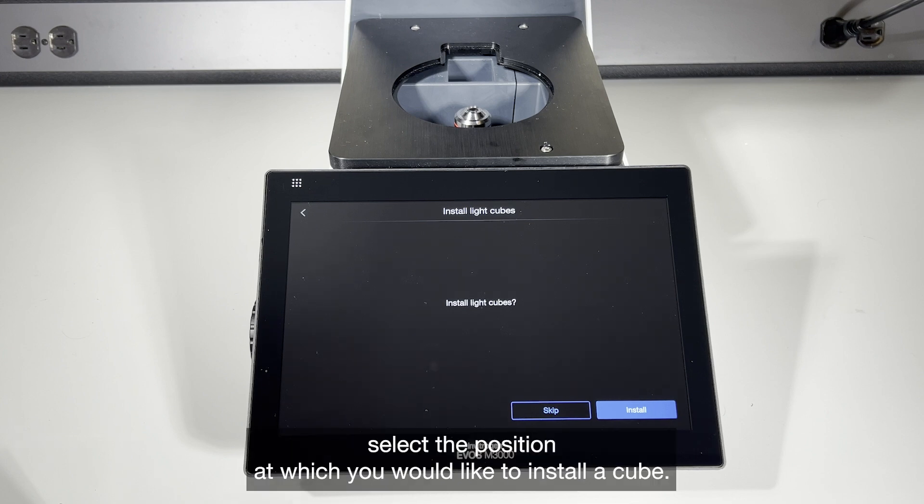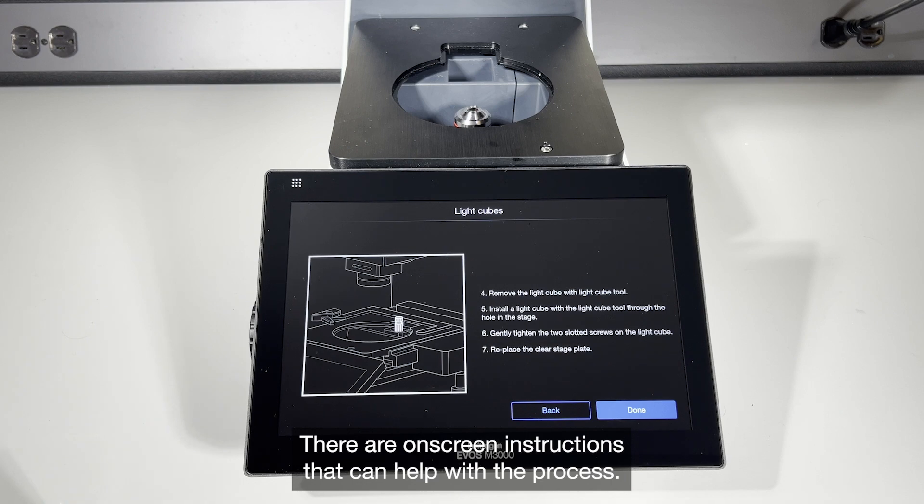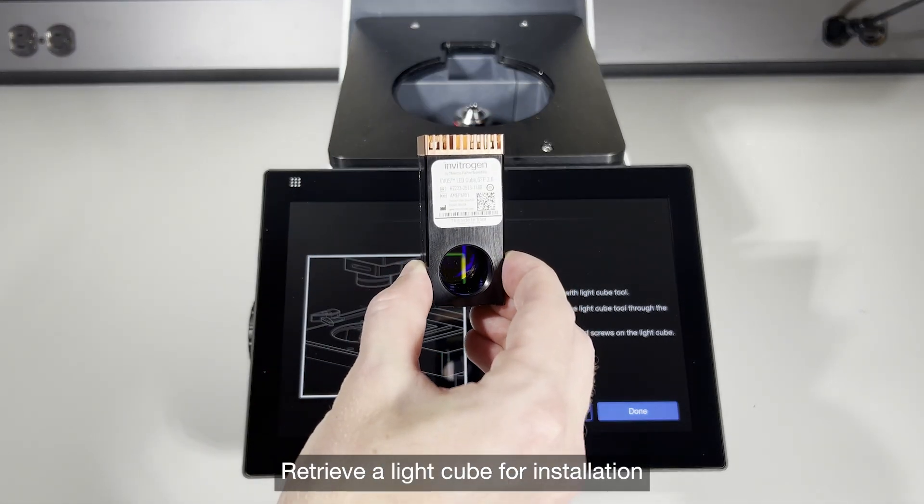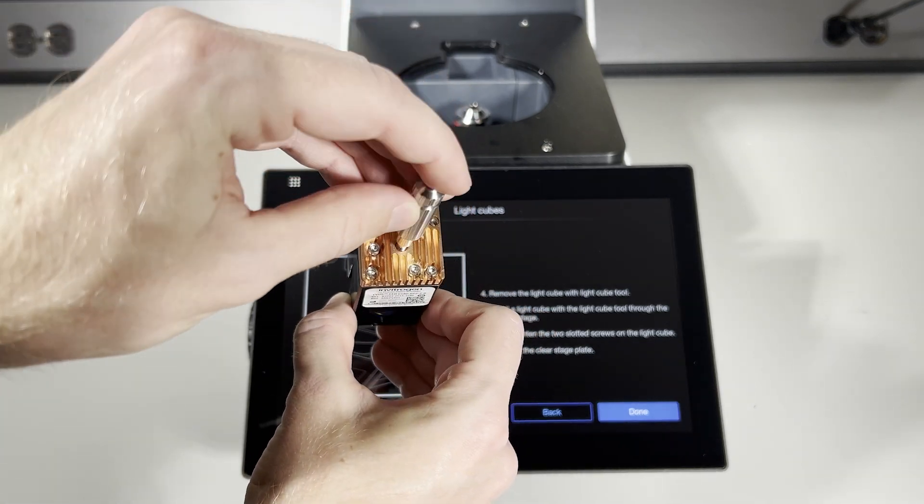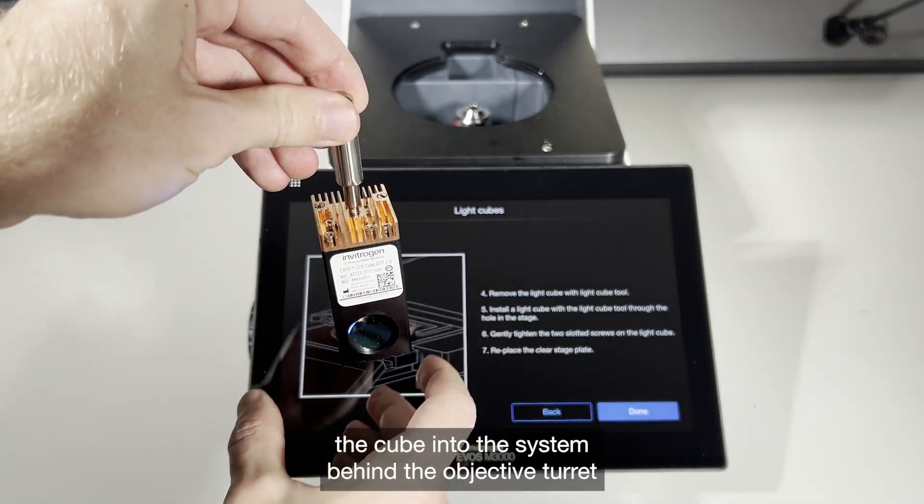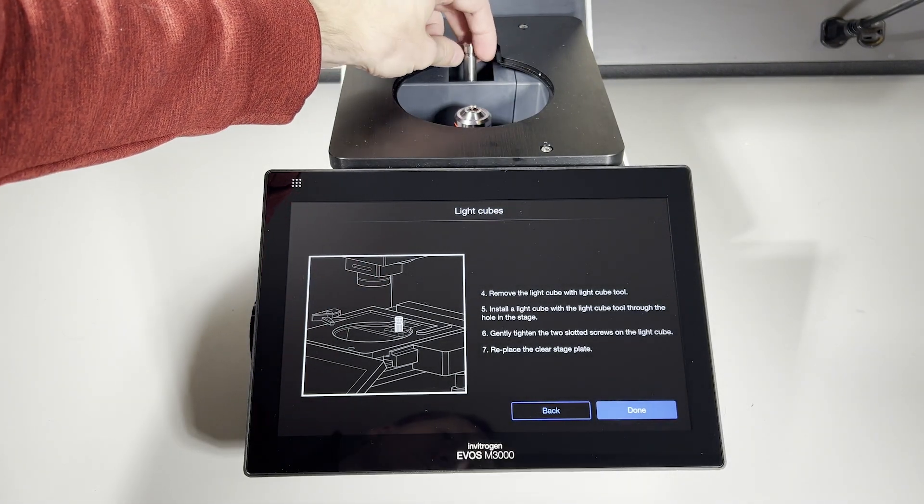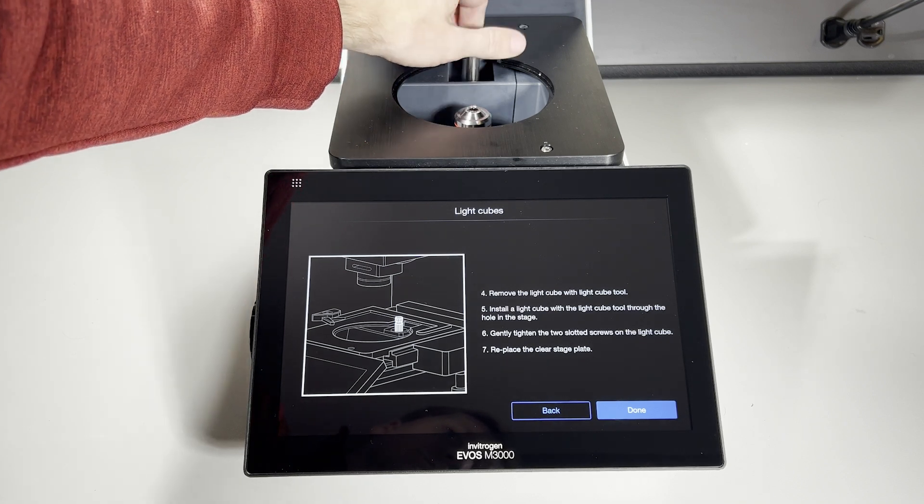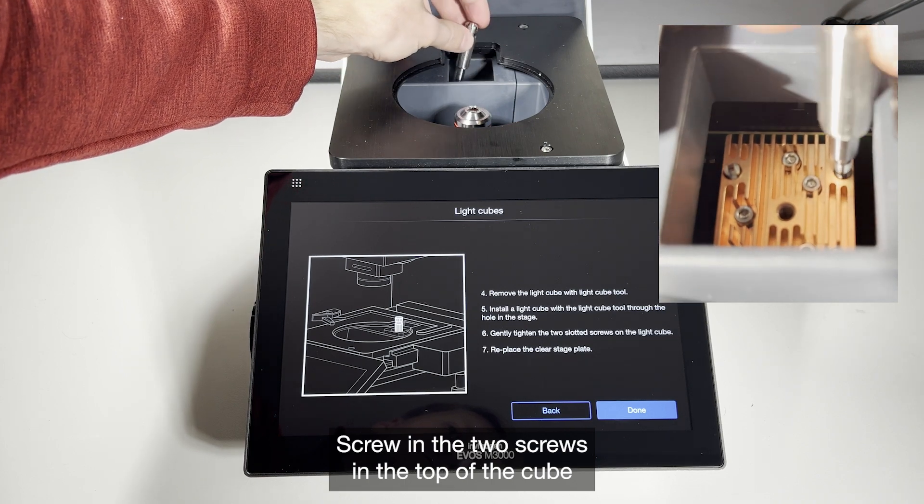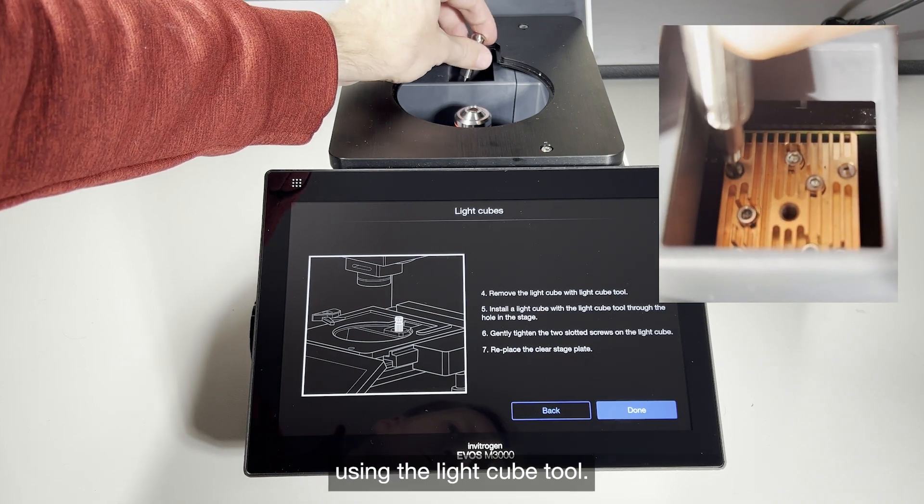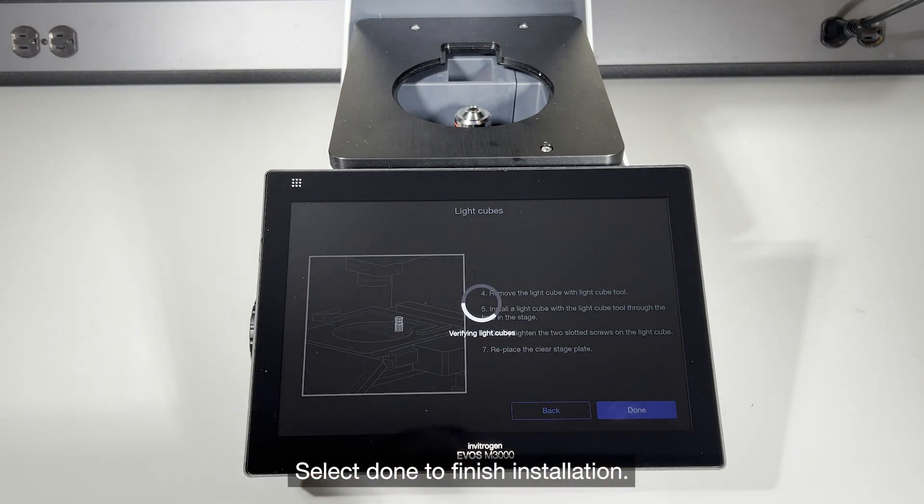If installing light cubes, select the position you would like to install a cube. There are on-screen instructions that can help with the process. Retrieve a light cube for installation and screw the light cube tool into the top of the cube. Lower the cube into the system behind the objective turret with the sticker right side up facing forward. Screw in the two screws in the top of the cube using the light cube tool. Select done to finish installation.